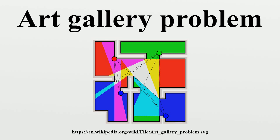In the computational geometry version of the problem, the layout of the art gallery is represented by a simple polygon, and each guard is represented by a point in the polygon. A set of points is said to guard a polygon if, for every point in the polygon, there is some guard such that the line segment between them does not leave the polygon.